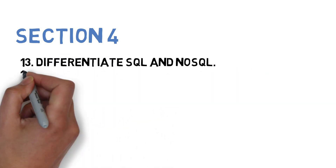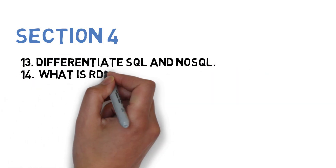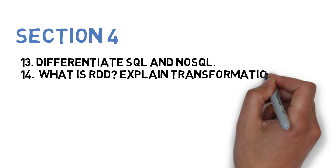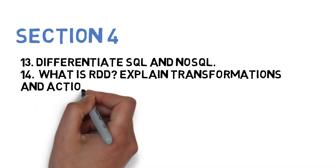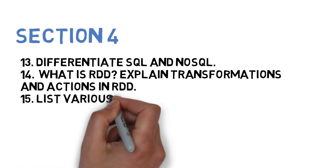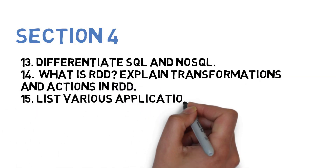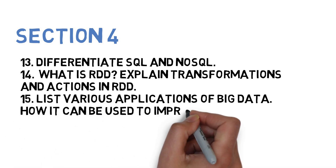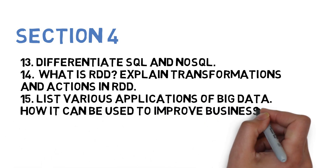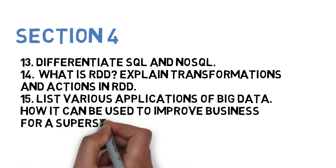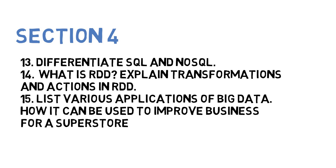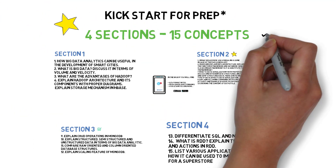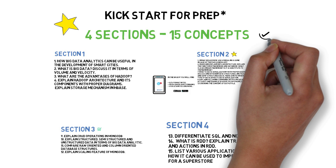For section 4, there are 3 questions — first is differentiate SQL and NoSQL. Next is what is RDD, explain transformations and actions in RDD. Next is list various applications of big data and how it can be used to improve business for a supermarket. These are the 15 questions you need to do for big data to get a kick start.